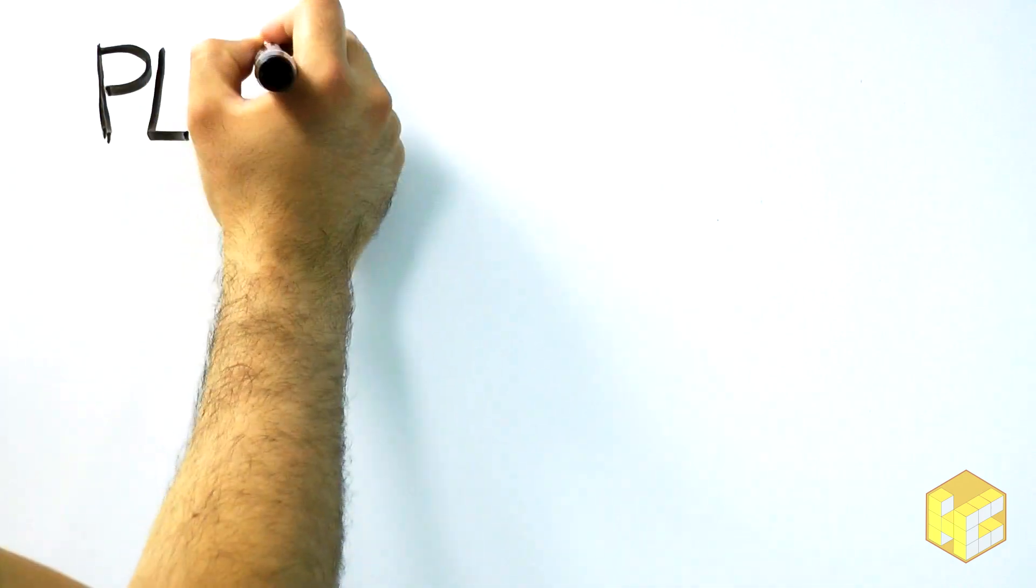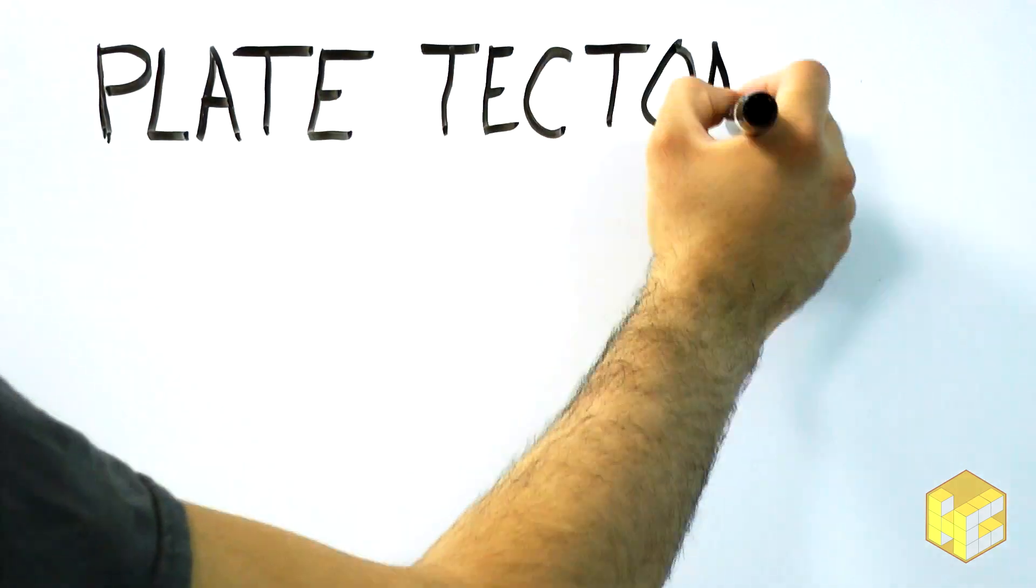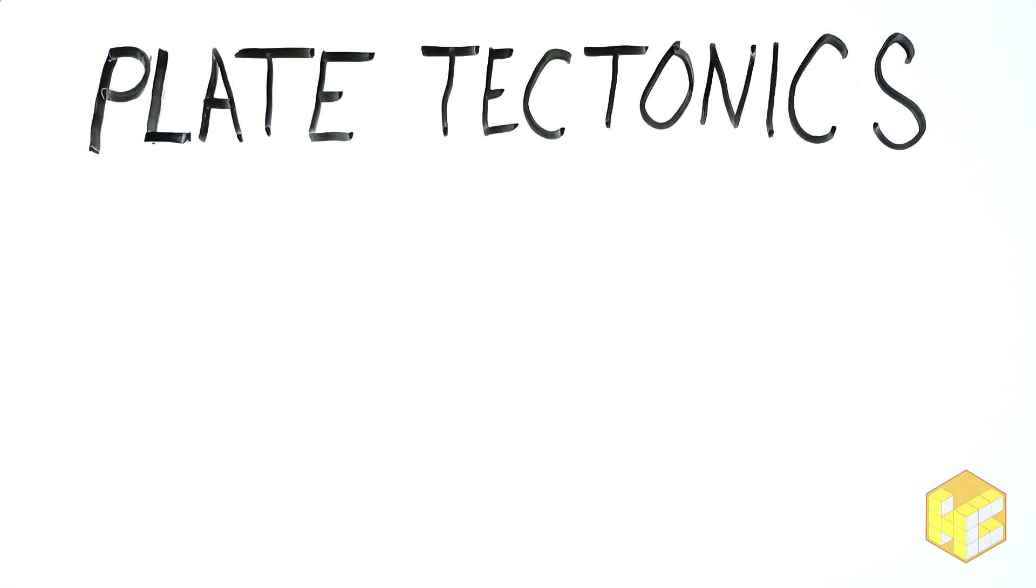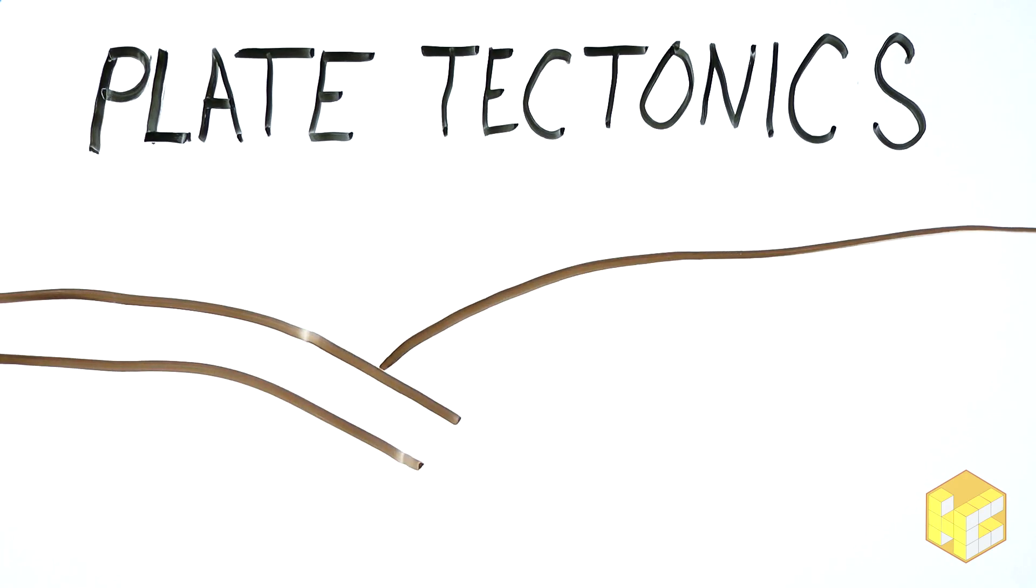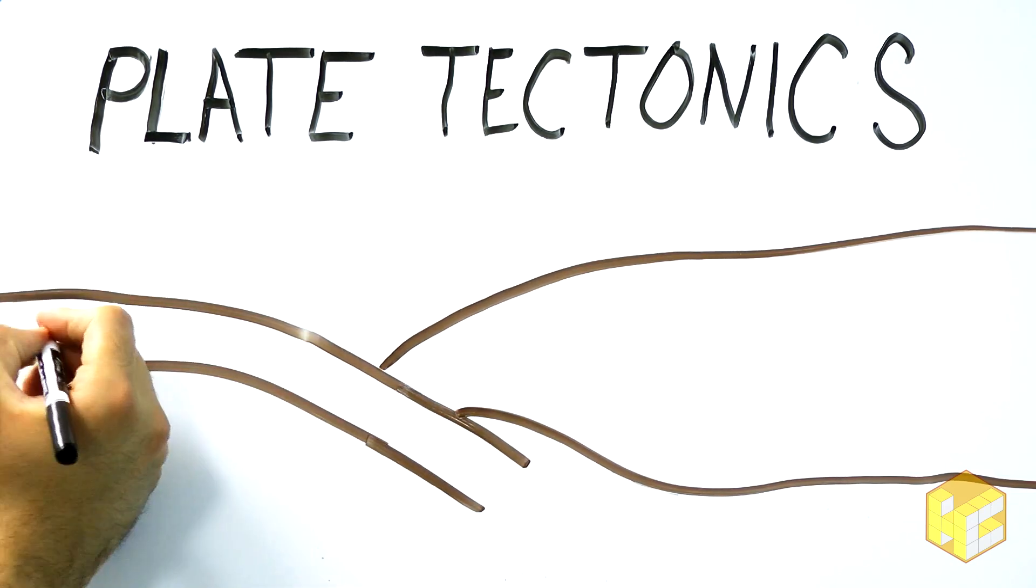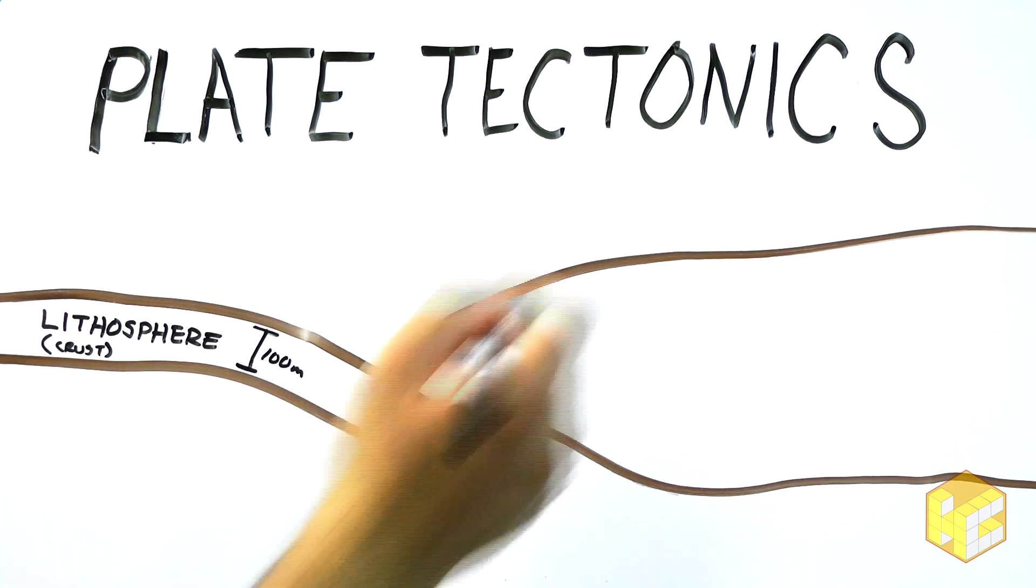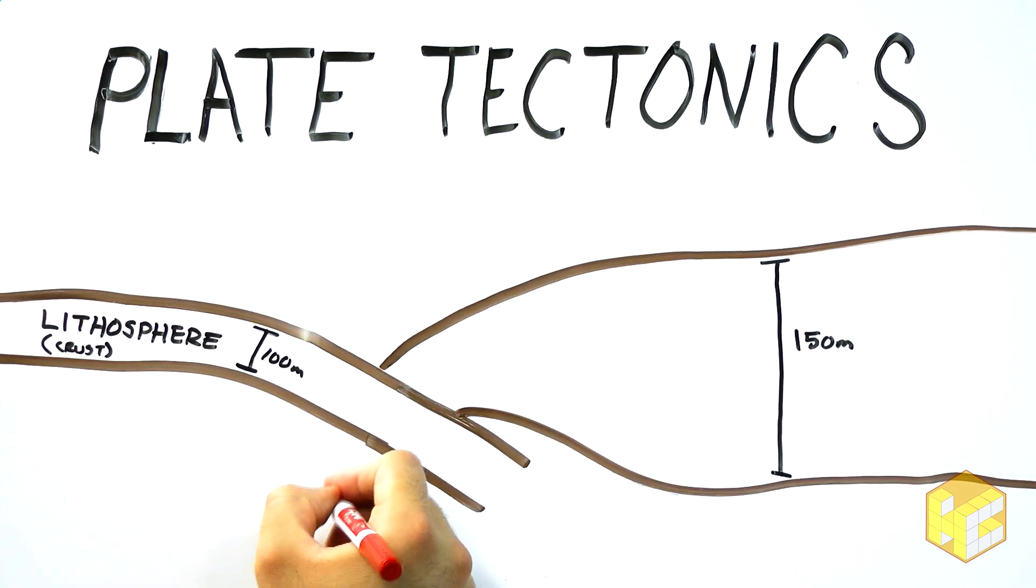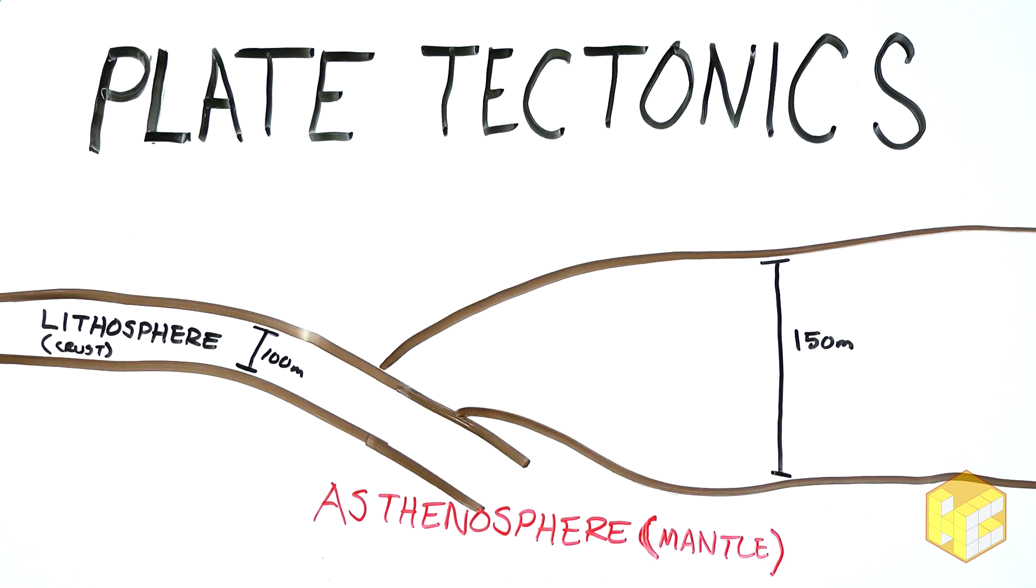Before we dive deep into the history of the supercontinents, we need to briefly touch on plate tectonics. The lithosphere is the outer layer of the Earth, often called the crust in colloquial terms, and ranges between 100 and 150 meters thick. It is broken up into chunks, often called plates, that float on the asthenosphere, a semi-molten layer of the mantle.